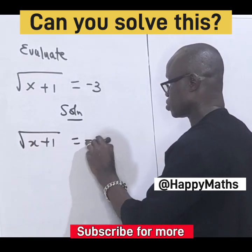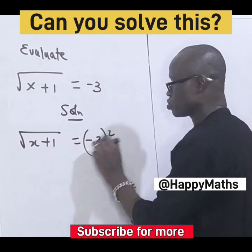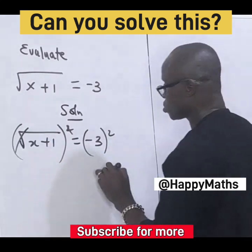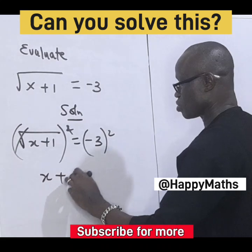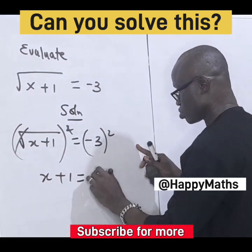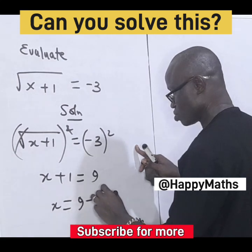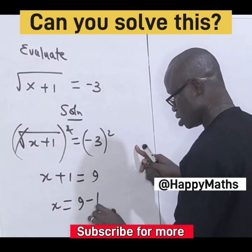Now you square both sides. The square will remove the square root, that will give us x plus one. Negative negative is plus, so that is nine. x is equal to nine minus one, therefore x is equal to eight.